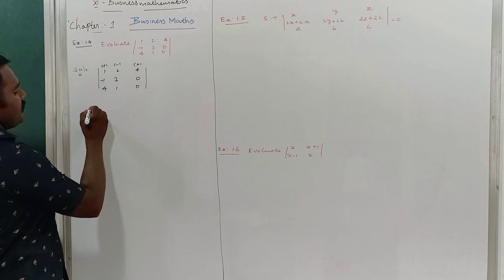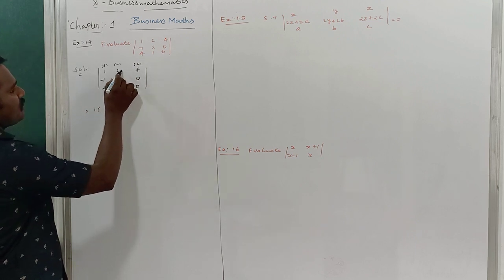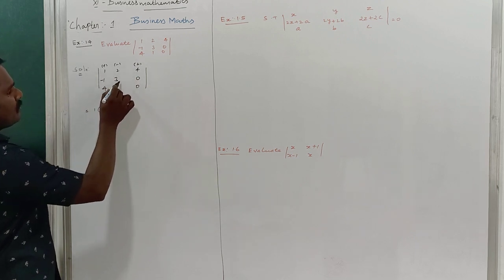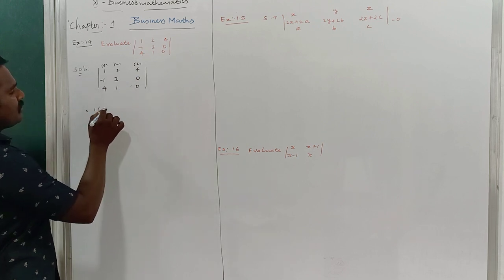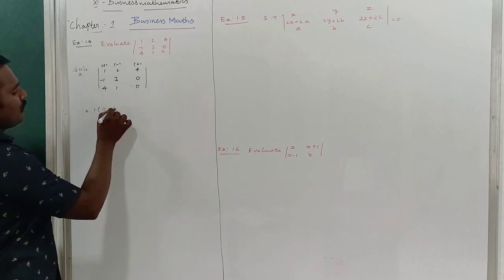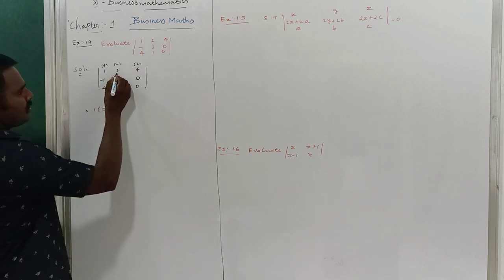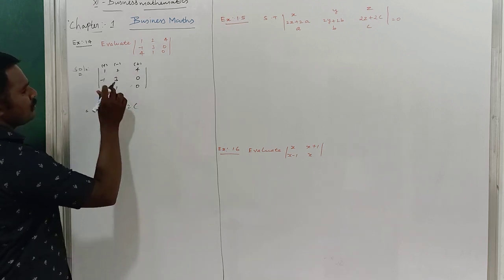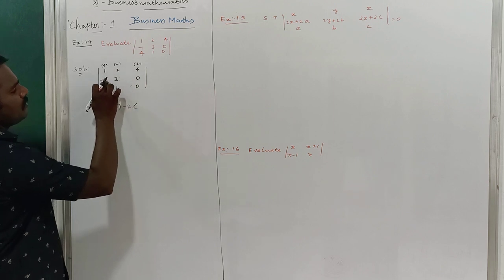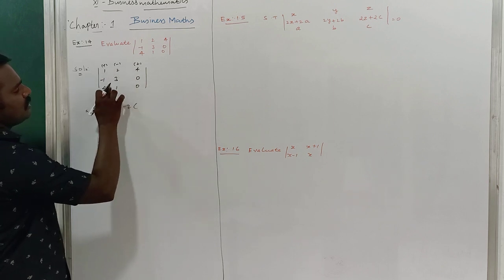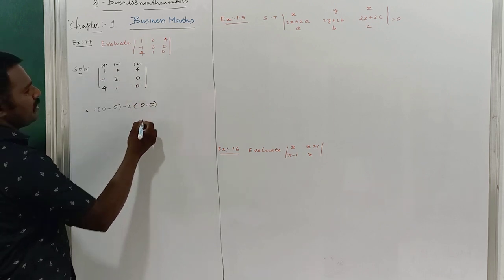So 1 — first one is plus 1. So I can remove this row and column. So product of this: 0, 3, 0 is 0, minus 1, 0 is 0. Next term is minus 2. So I can remove this row and column: 0 and 0, 0, 0, minus 0.